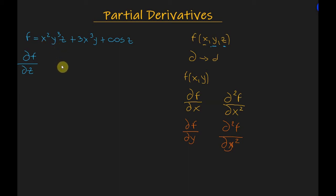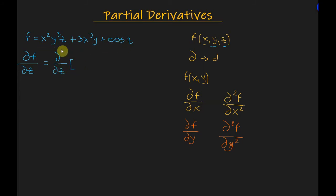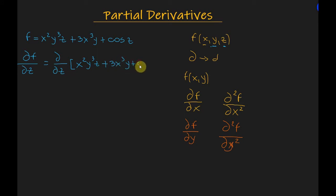So the derivative of the function with respect to z is the following. Partial derivative with respect to z of x squared y cubed z plus 3x cubed y plus cosine z.